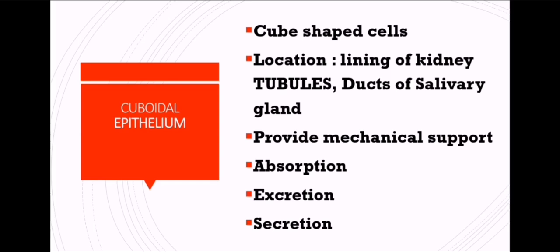The fifth kind of epithelium is cuboidal epithelium. The word itself says the cells are arranged in cube-like shapes. They are present in the lining of kidney tubules — there are two types: distal convoluted tubule (DCT) and proximal convoluted tubule (PCT) — and in the ducts of the salivary gland, which are present below the cheek or below the mouth area. The main function is not absorption, not secretion, not protection alone.